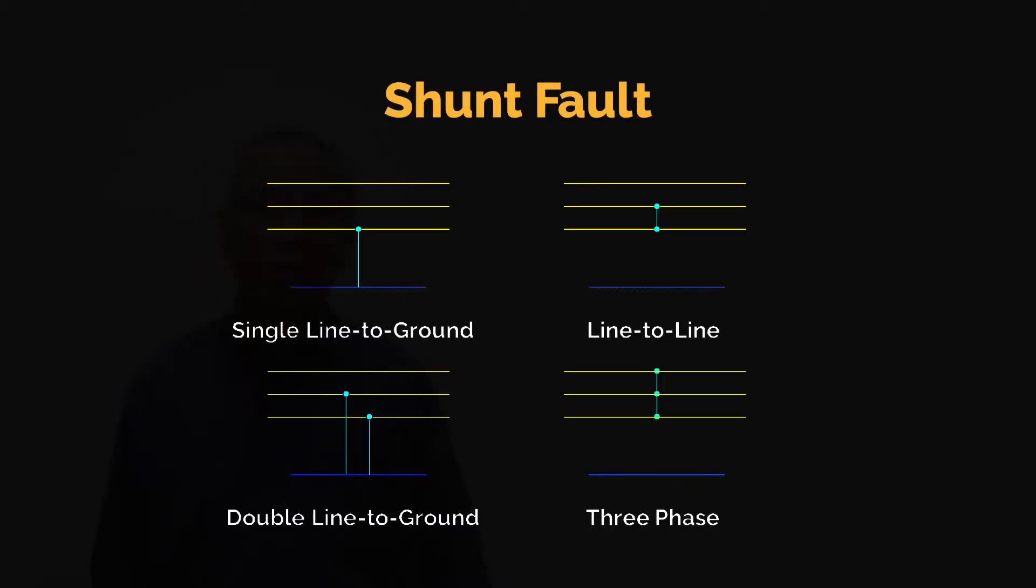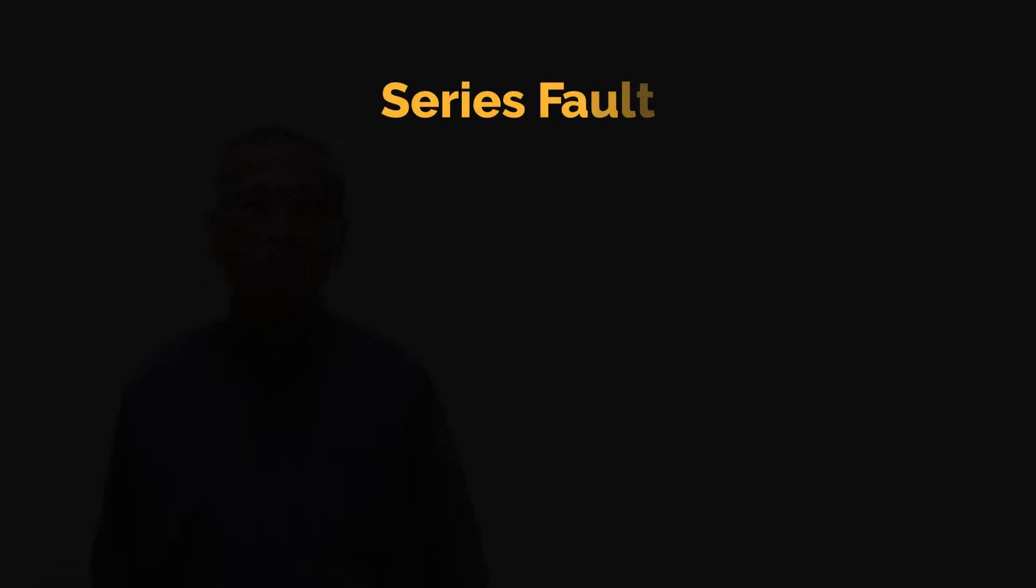As shown in this figure, this illustrates the different types of fault: single line-to-ground, line-to-line, double line-to-ground, and three-phase fault. And similarly for the series fault, one line open and two lines open.